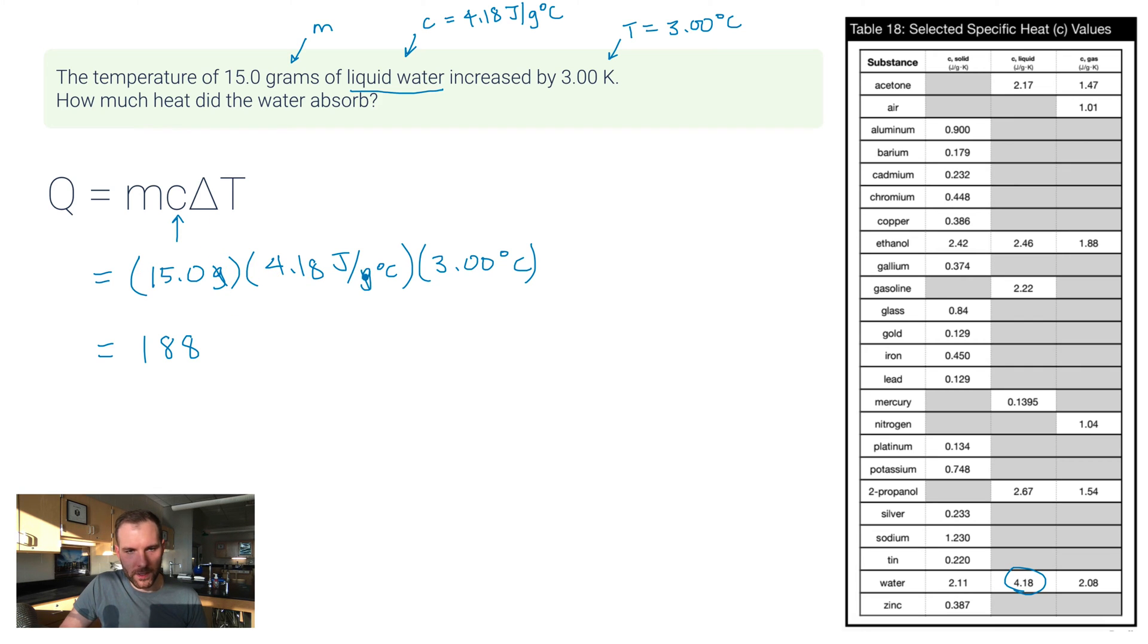188, three significant figures there because I've got three sig figs in all my numbers here. And then the unit—let's take a look at what the unit would be. Well, grams cancels out because the bottom of this is grams. Degrees Celsius cancels out because the bottom of that is degrees Celsius. And look what we're just left over with: joules. Now sometimes a problem will say, hey, what's that in kilojoules? And if that's the case you just want to divide this by a thousand. But in this case, this is good to go, just as 188 joules. So that's maybe the most basic example of a calorimetry type problem.